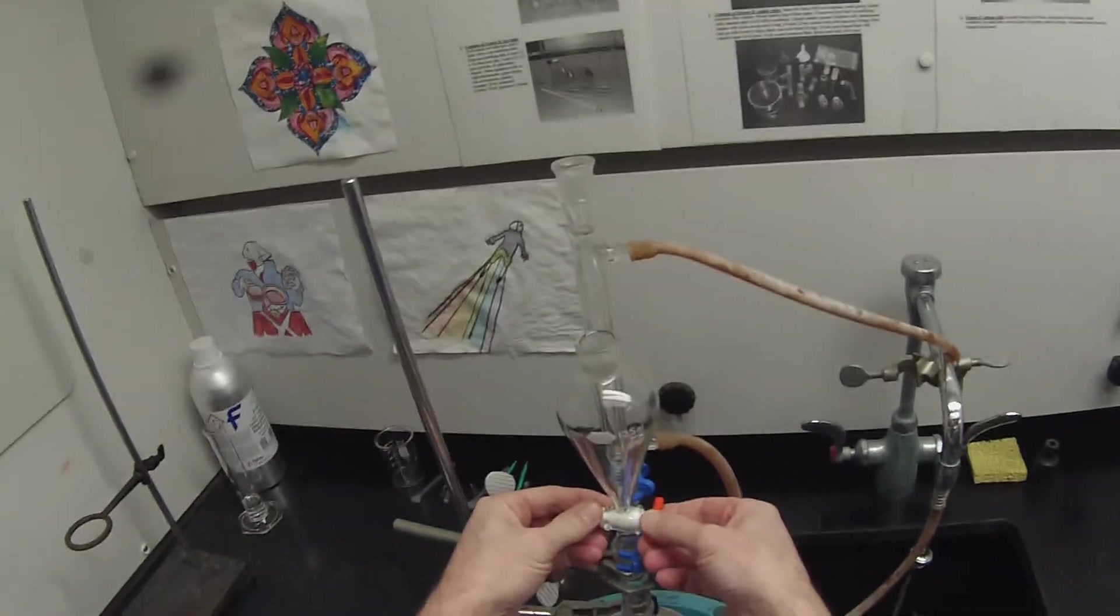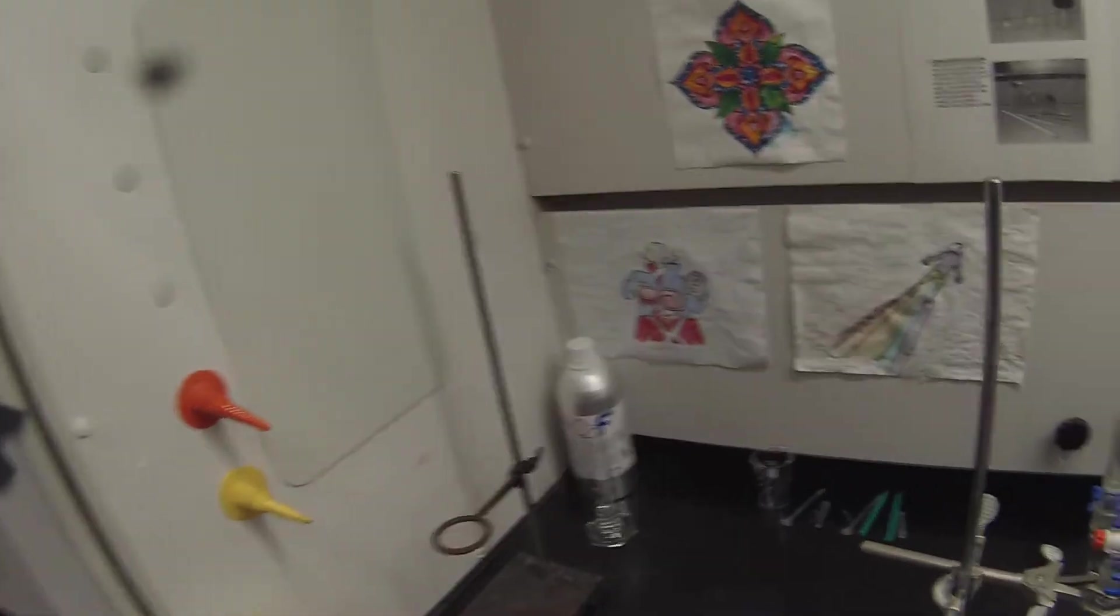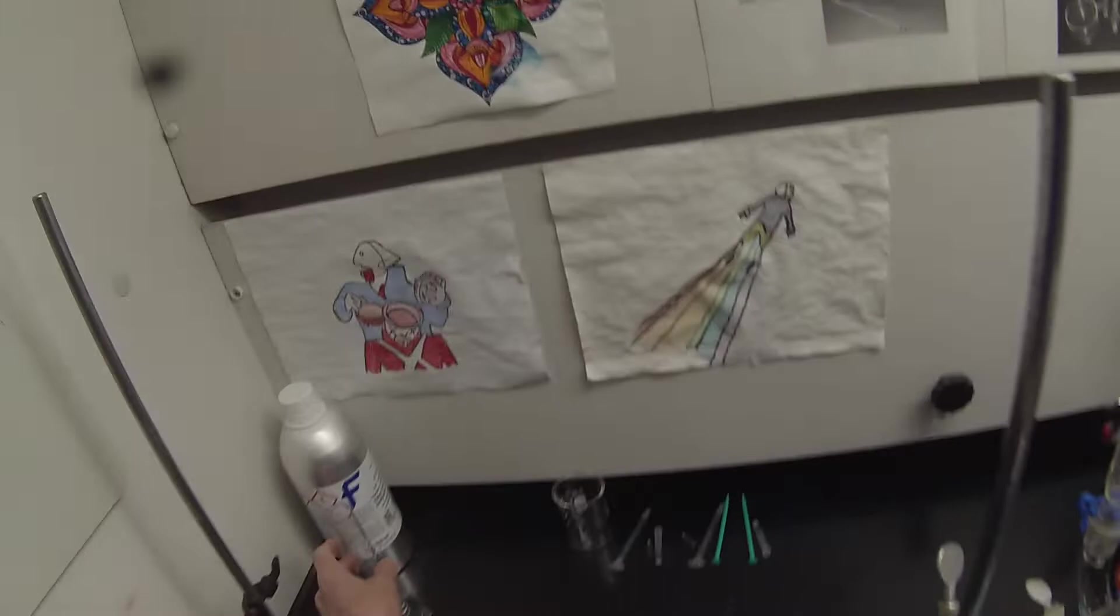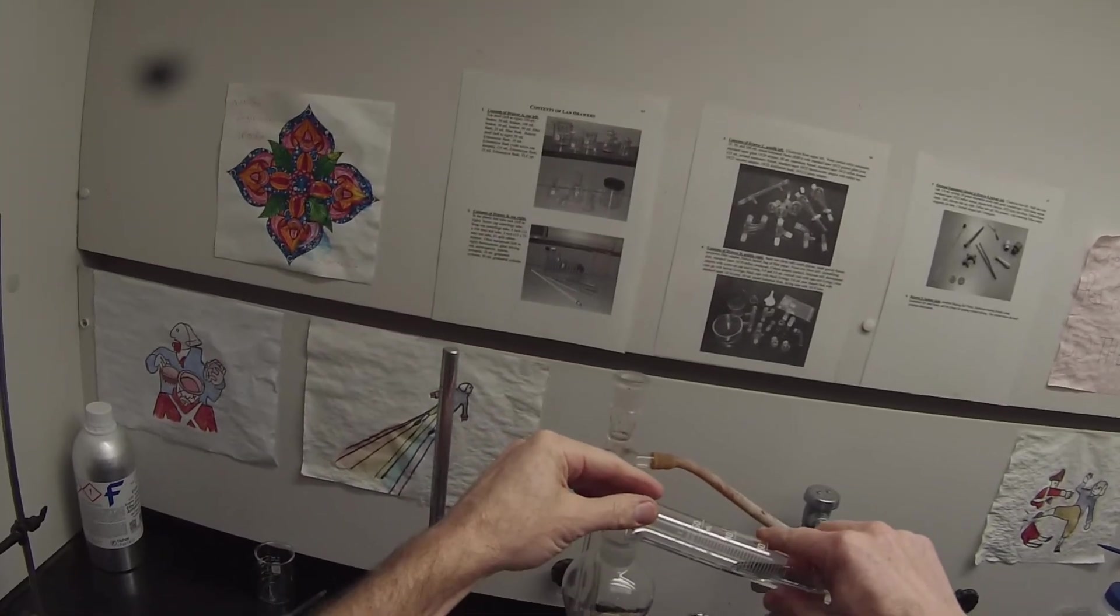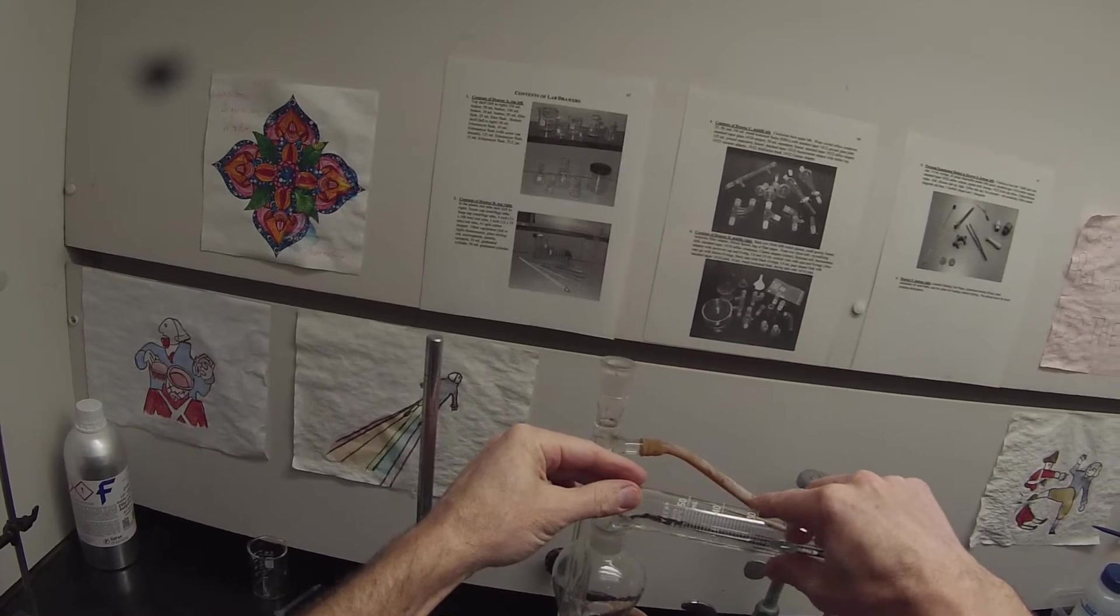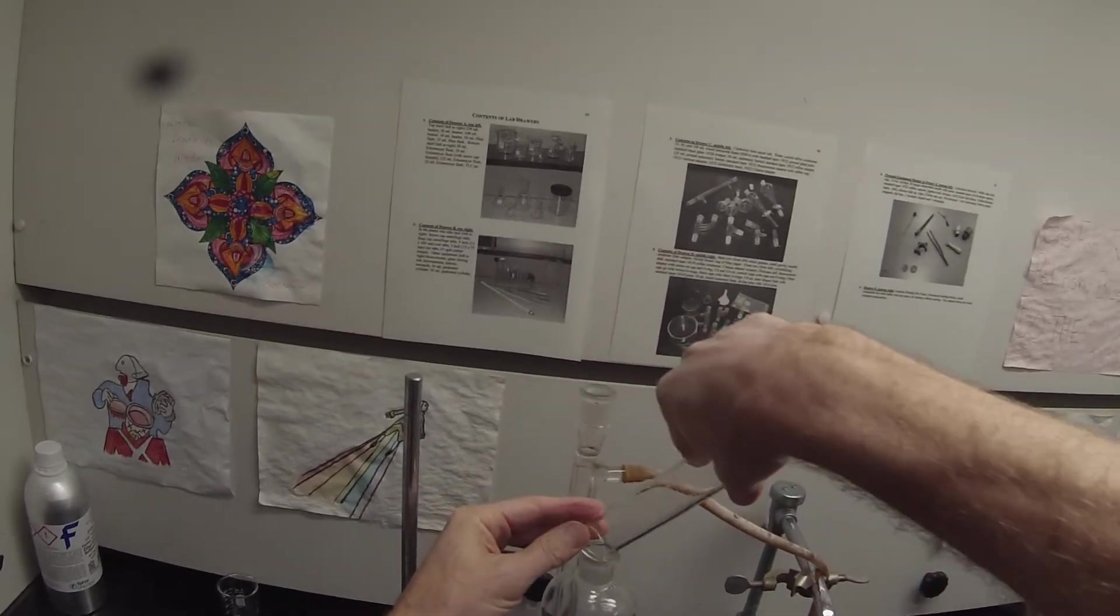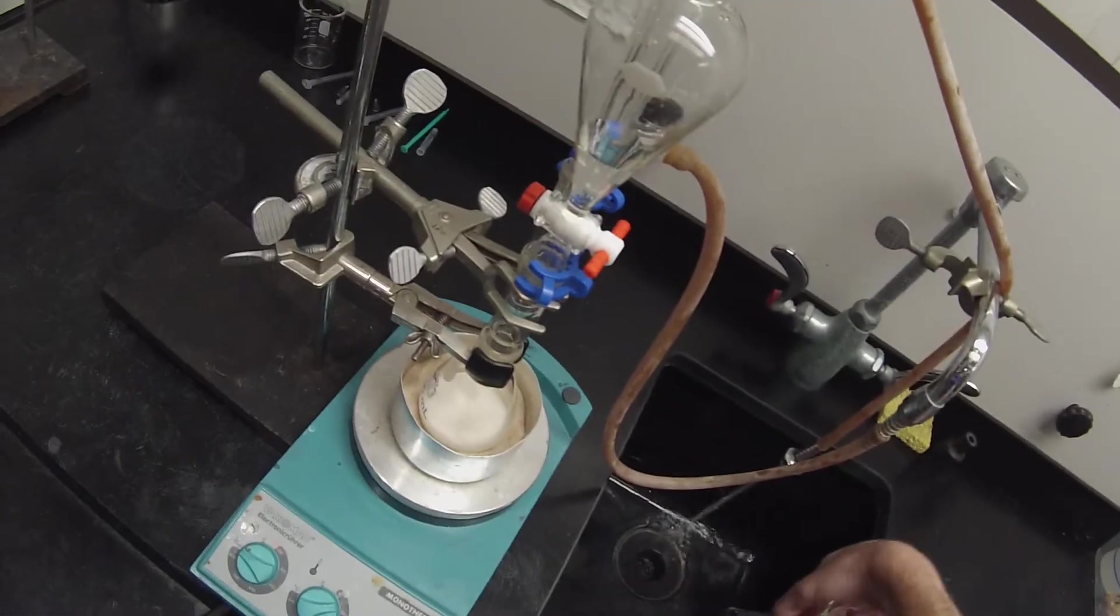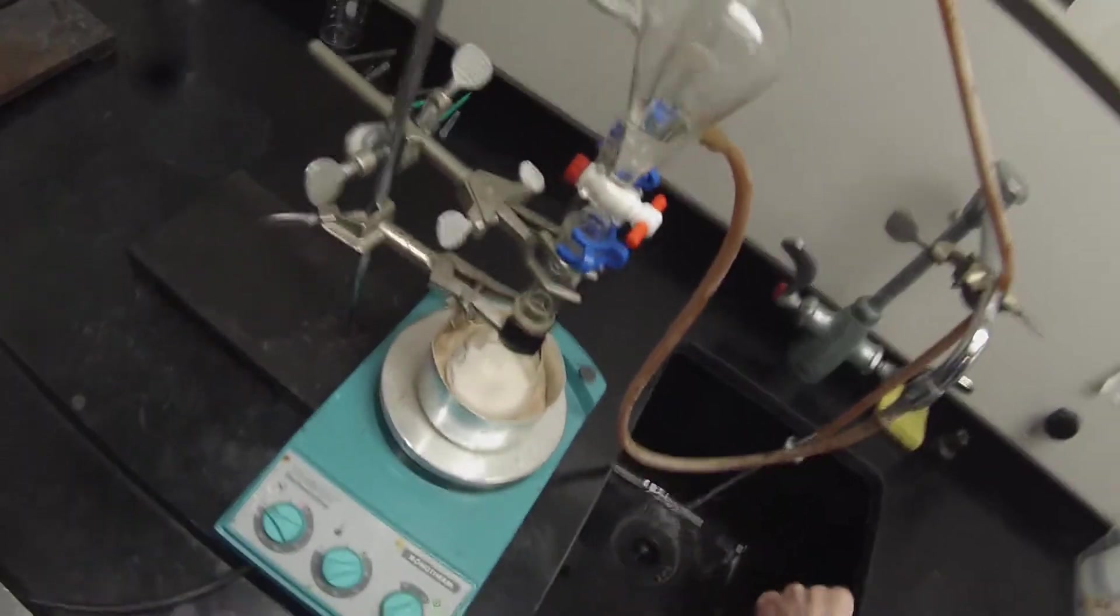We no longer need the separatory—well, actually we do need the separatory funnel because we're going to be using it to add the ammonium chloride solution dropwise. So I'm going to put the ammonium chloride solution, the 10 milliliters ammonium chloride, into the separatory funnel. We'll just rinse that out. We can use this same separatory funnel to measure our ether.